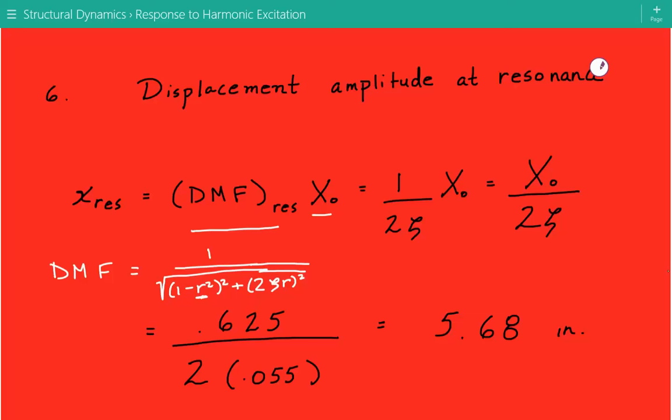So there's a special form of the DMF, the dynamic magnification factor, that has been calculated at resonance condition, in which you don't need to know the value of r. All you need to know is zeta. I'm not going to derive it in this video, but the dynamic magnification factor at resonance simply equals 1 divided by 2ζ.